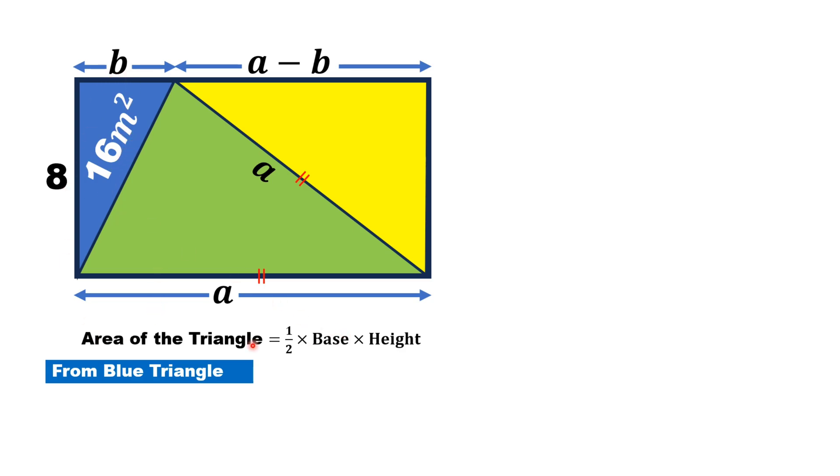Substituting these values in this formula, we get 16 equals half times B times 8. Simplifying and solving for B, we get B equals 4 meters.